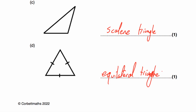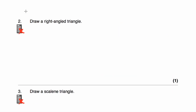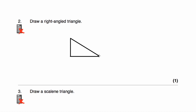Let's have a look at question number two. We've been asked to draw a right-angle triangle. We just need to draw a triangle with a right angle in it. So there's a vertical line, there's a horizontal line — so that will be a right angle — and then we can just join it up. So that will be a right-angle triangle.